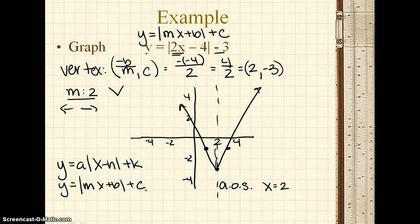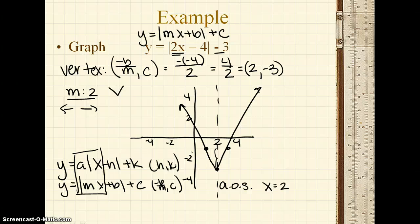What you should recognize is the actual location of your slope. Okay, so when the slope is on the outside, it's h, k. And when the slope is on the inside, it's negative b over m comma c. That is super important that you recognize the difference between the two different forms of absolute value.